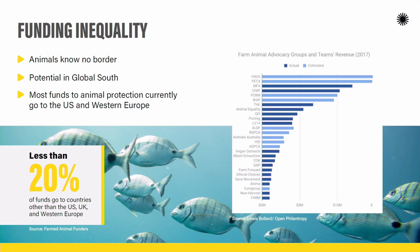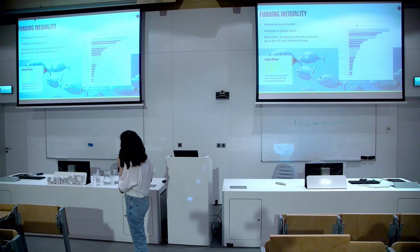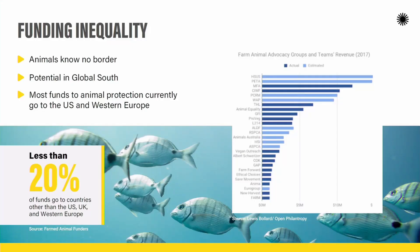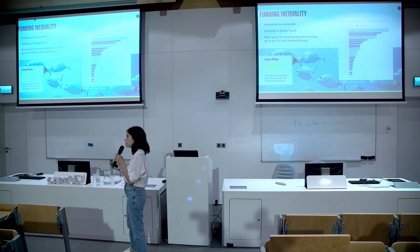However, funding for advocacy doesn't quite match that number. Looking at a graphic from Lewis Bollard listing the approximately 15 animal protection organizations in the world with the highest budgets — from 2017, so it may have changed — none of them are organizations based in the Global South. Zero. So you have 82-88% of animals living in the Global South, but the biggest chunk of funding to help animals is not there.